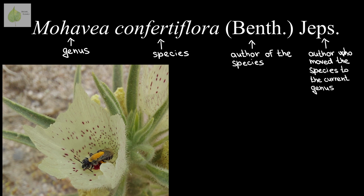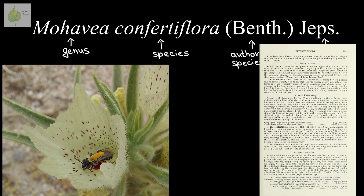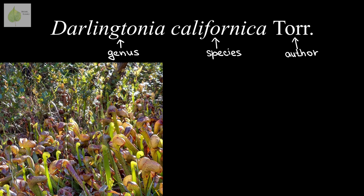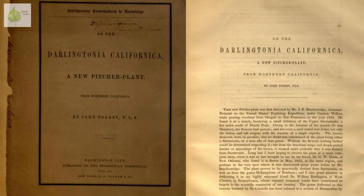Mojavea confertiflora — here we're dealing with the same case as the previous one. The author in parentheses, Benth., is the one who originally described the species, but the second author, Jepson, moved it into its current genus, Mojavea. As opposed to zoology, in botany both authors are mentioned. Darlingtonia californica is an easy example with one abbreviated author, which is a hint that this is a botanical name. I found the original publication by Torr. that describes this species — it's actually devoted only to this species, so it's a pretty good read.